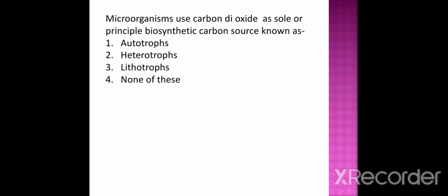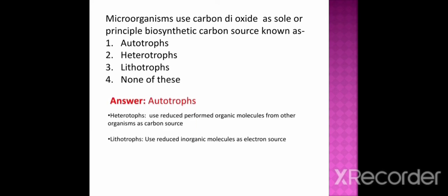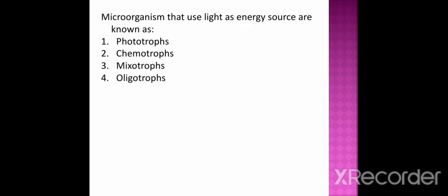Next question: microorganisms that use carbon dioxide as a sole or principal biosynthetic carbon source are known as option 1 autotrophs, option 2 heterotrophs, option 3 lithotrophs, option 4 none of these. The correct option is autotrophs. Heterotrophs use reduced preformed organic molecules from other organisms as a carbon source, whereas lithotrophs use inorganic molecules as their electron source.